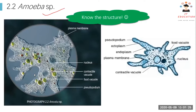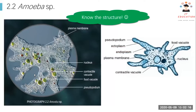Let's look at the Amoeba species. The first structure is the pseudopodium. The word 'pseudo' means false, and 'podium' means feet, so it's like a false foot. It is a projection of the cell body — these extended parts are all pseudopodia. Amoeba also has a plasma membrane, a contractile vacuole, and a food vacuole. The food vacuole forms when the amoeba has just eaten something.